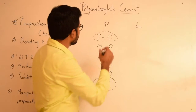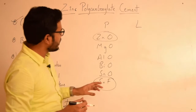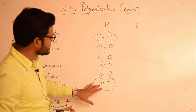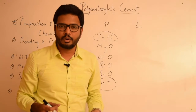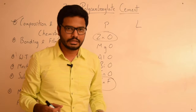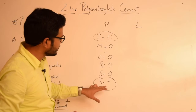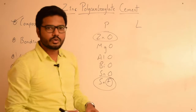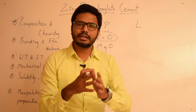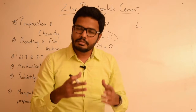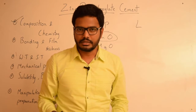Stannous fluoride plays an important role in improving the mechanical properties and strength of this cement, so it can be considered as a filler. Also, because it contains fluoride, zinc polycarboxylate cement has the ability to release fluoride, though this release is very minimal compared to glass ionomer cements or other fluoride-releasing cements.